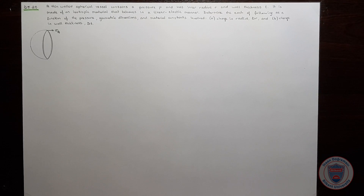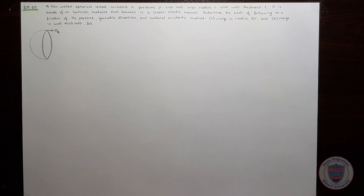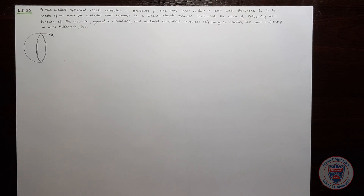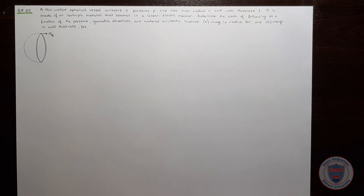In this question, we have a thin-walled spherical vessel which contains a pressure P and has an inner radius R and a wall thickness T. Our goal is to find the change in radius and then the change in wall thickness.